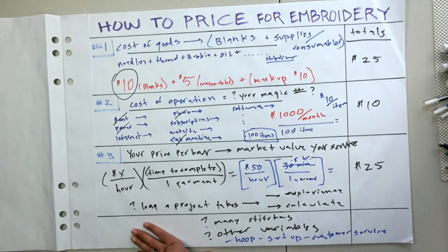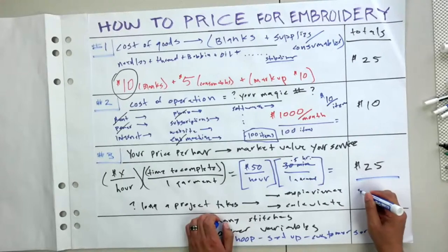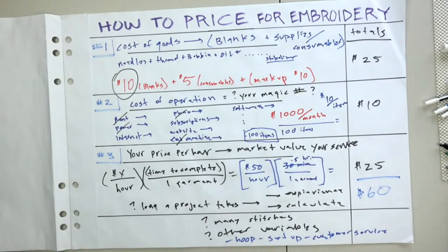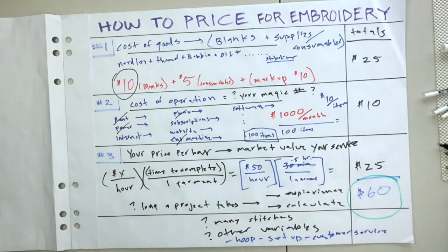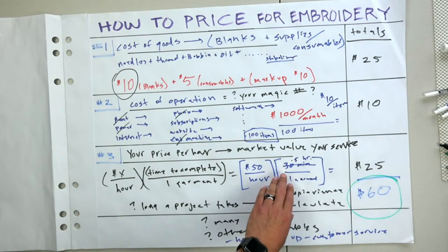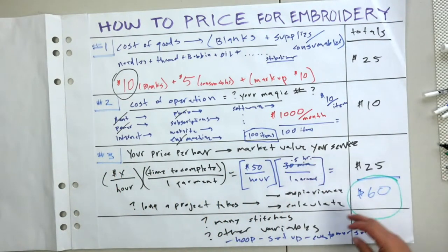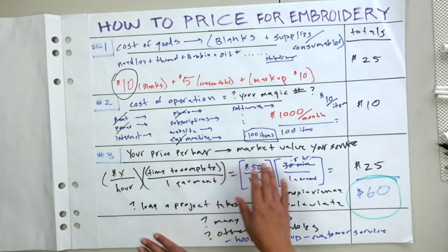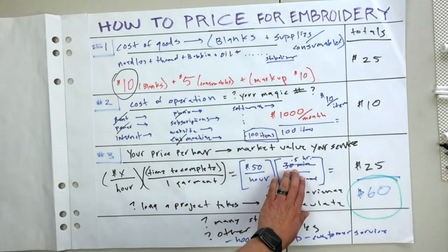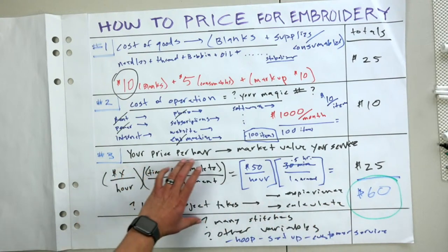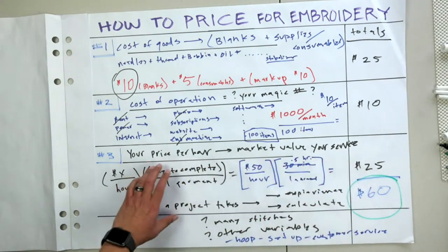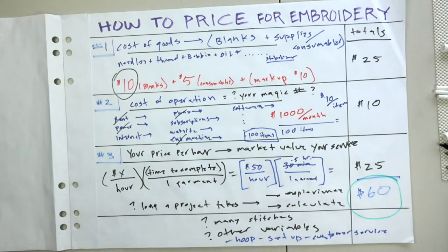Adding it all up: Cost of Goods $25, Cost of Operation $10, Price Per Hour $25 — our total charge is $60. That's based on a $10 blank item with 30 minutes completion time. We assumed we already knew how long it takes, but we'll get into how to determine that by stitch count, because sometimes you don't know how long something will take.